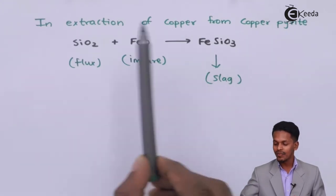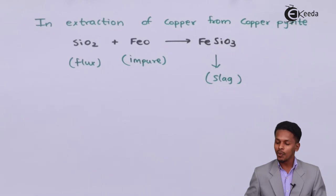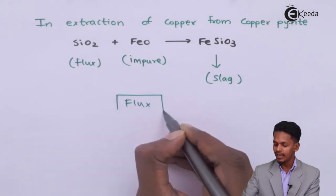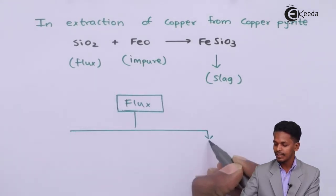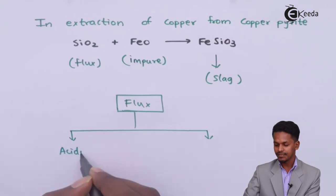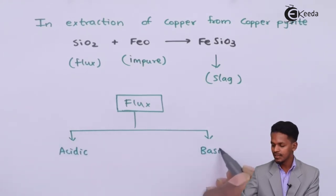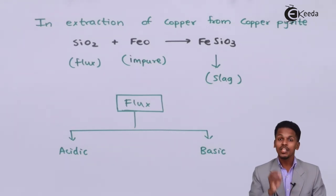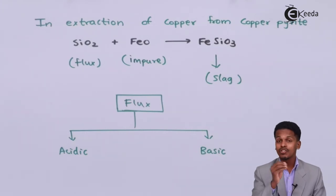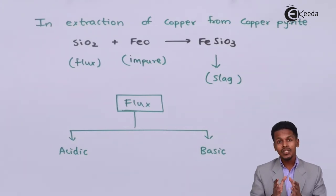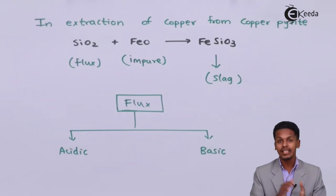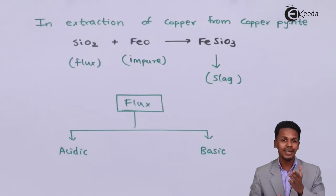Flux is divided into two types: acidic flux and basic flux. The choice of flux depends on the nature of the gangue. If the gangue is basic in nature, we use acidic flux; if the gangue is acidic in nature, we use basic flux.